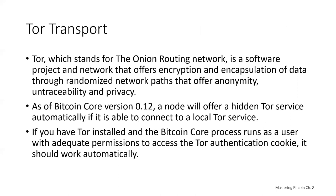Tor — the Onion Routing Network — is a software project and network that offers encryption and encapsulation of data through randomized network paths, offering anonymity, untraceability, and privacy. Bitcoin Core offers several configuration options that allow you to run a Bitcoin node with its traffic transported over the Tor network. Bitcoin Core can also offer a Tor hidden service allowing other Tor nodes to connect to your node directly over Tor. If you have Tor installed and the Bitcoin Core process runs as a user with permissions to access the Tor authentication, it should work automatically.